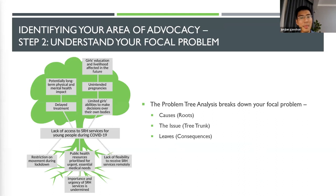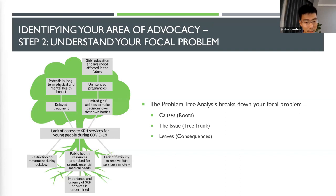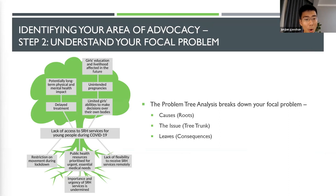A very constructive tool to help you understand what contributes to a social issue and how it impacts broader society is called tree analysis. The causes are the roots, the issue is the tree trunk, and the leaves are the consequences. For example, looking at lack of access to SRHR services for young people during COVID-19 — it may be caused by restrictions on movement during lockdown, public health resources being prioritized to urgent medical needs, and lack of flexibility to receive SRHR services remotely.